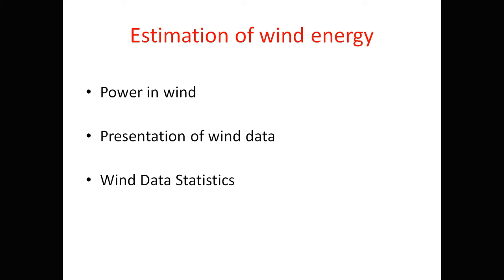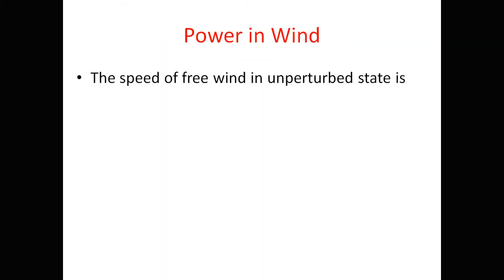First, power and wind. The speed of free wind in an unperturbed state is taken as u₀. This means there are no perturbations — the wind is continuous and the speed is constant. That constant value is taken as u₀.